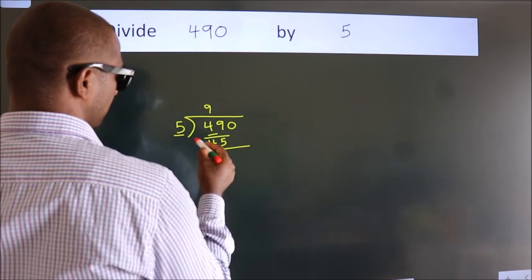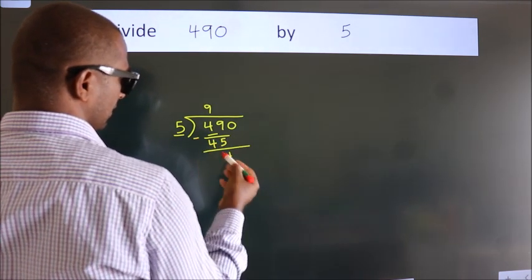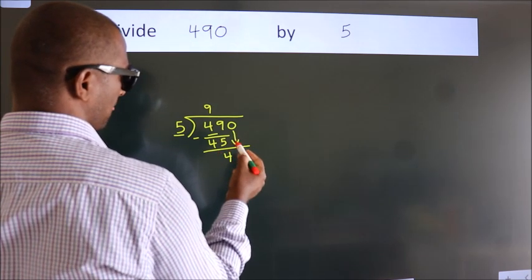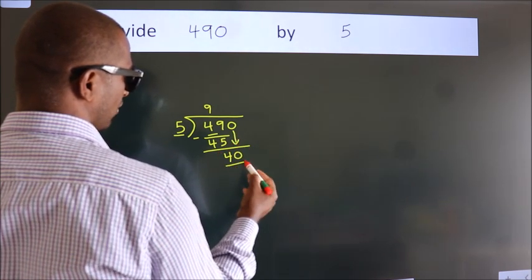Now we should subtract. We get 4. After this, bring down the beside number. So 0 down. So 40.